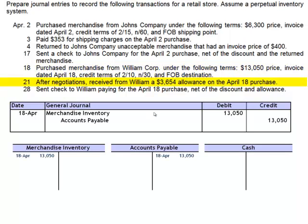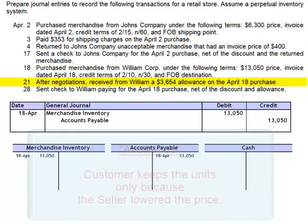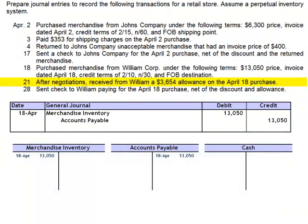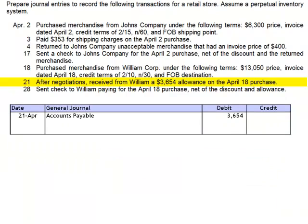April 21st: after negotiations, received from William Corp a $3,654 allowance on the April 18th purchase. An allowance means we called up William Corp and were not happy with the units — the quality wasn't what we expected. We didn't return the units, but kept them at a reduced price. William Corp reduced the amount we owed by $3,654, making the inventory less expensive. The journal entry is a debit to accounts payable $3,654 and a credit to merchandise inventory.